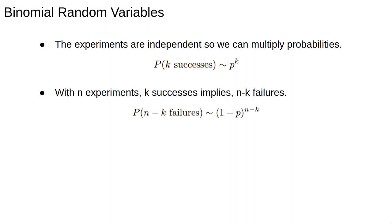If there are k successes the rest must have been failures because there are only two possible outcomes. There are n minus k remaining experiments so the probability of getting n minus k failures is 1 minus p to the power of n minus k. Again pause here and make sure you understand why.